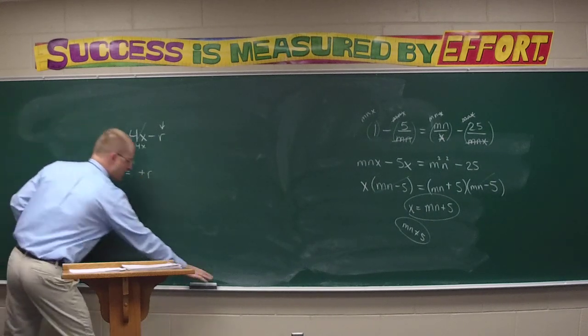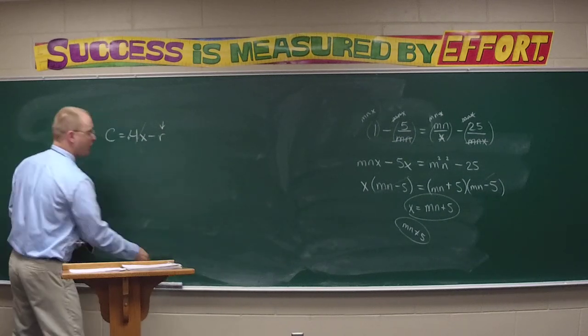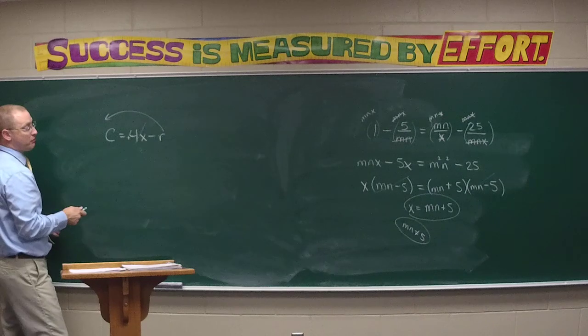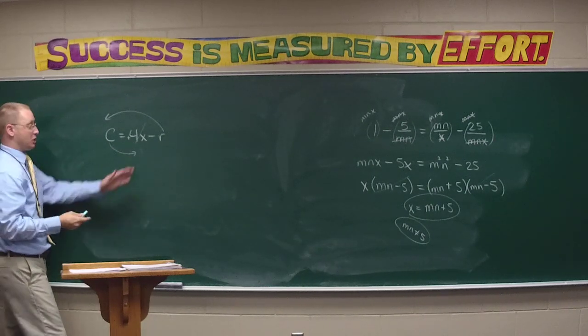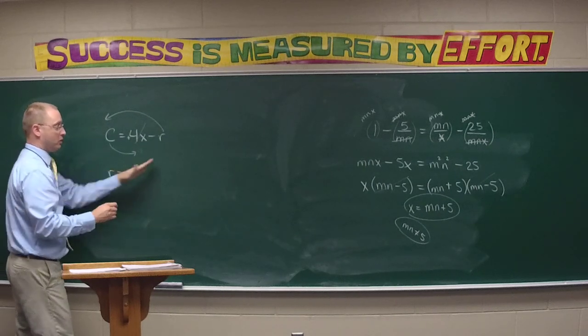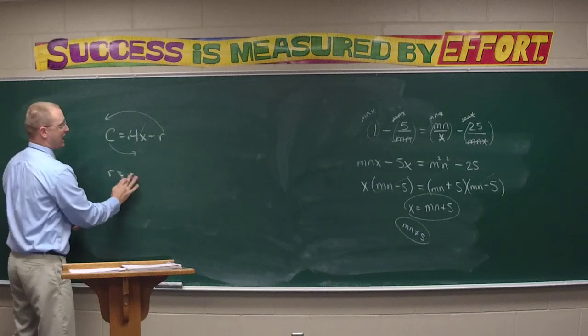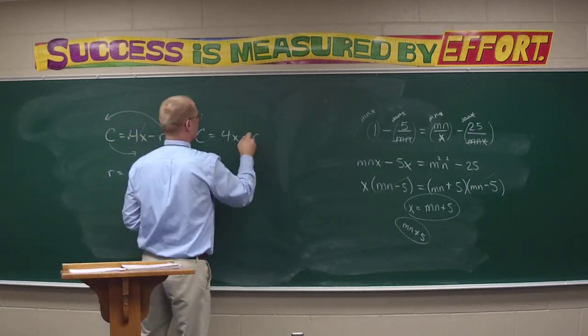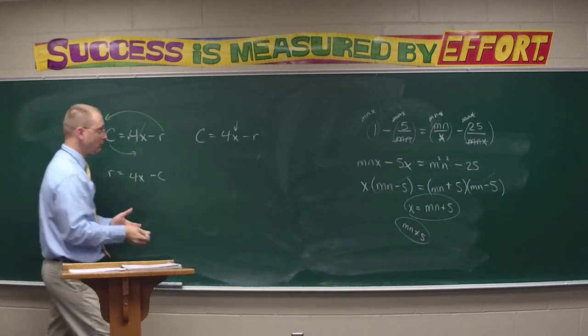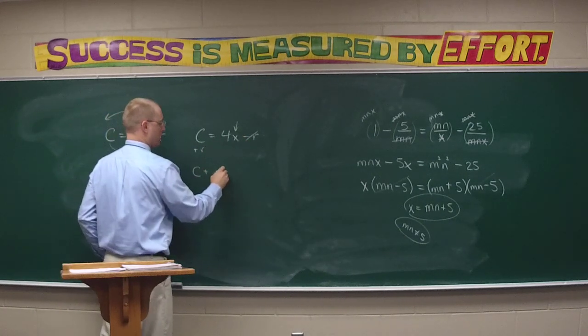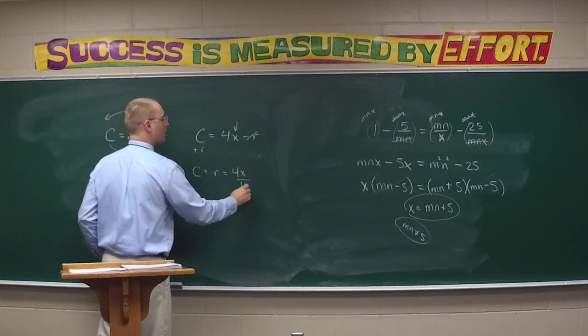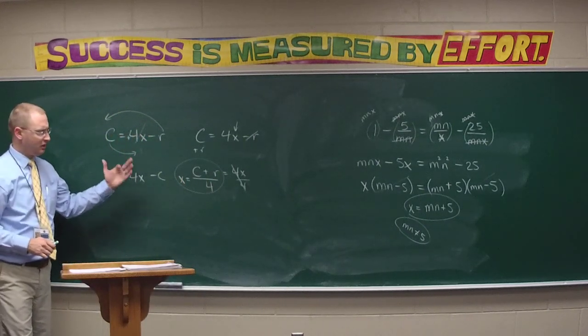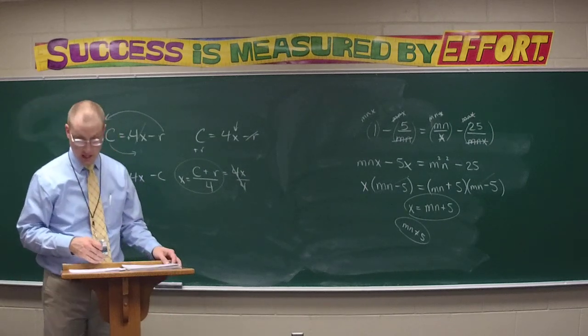The other way that might even be quicker: since I want the r to be positive, why not move the r to the other side? And while we're at it, also move the c and just do a double switch. So now we get r equals 4x minus c. That would be another way to solve it. What if I wanted to solve for the x, Brandon? Add the r to get c plus r equals 4x, and then divide by 4 on both sides, so x equals c plus r over 4.